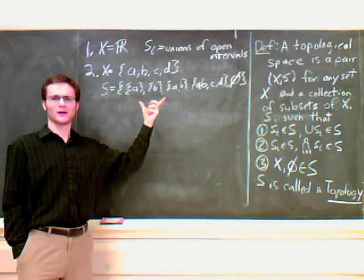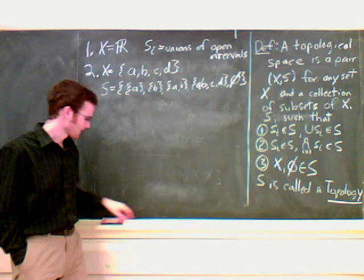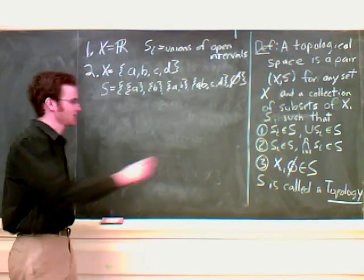This example here is completely different than this example. This one used familiar things that we're used to. Here, we just declared these to be open sets, made sure it followed the properties. And that's kind of weird, right?